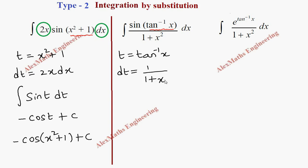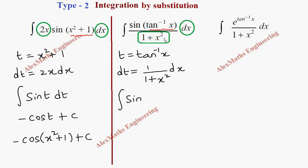Its differentiation gives dt = 1/(1 + x²) dx. We find the term dx/(1 + x²) in the question itself. When we write everything in terms of t, this becomes integral of sin(t) dt.